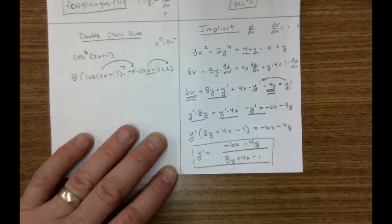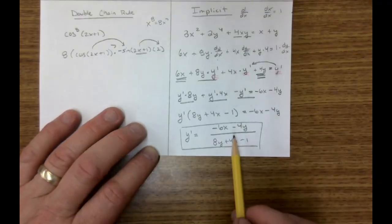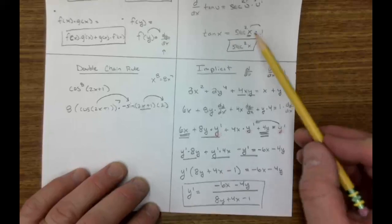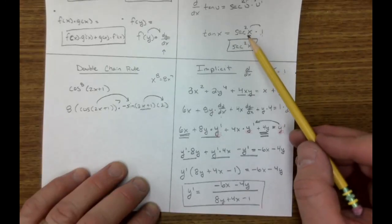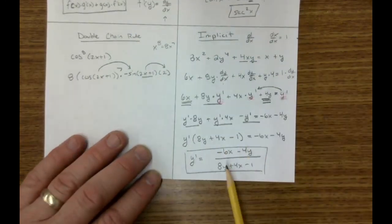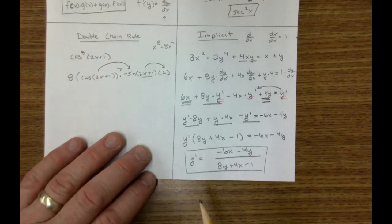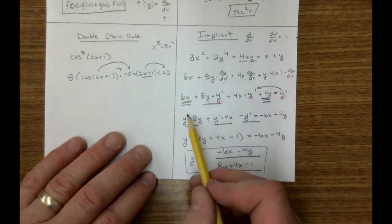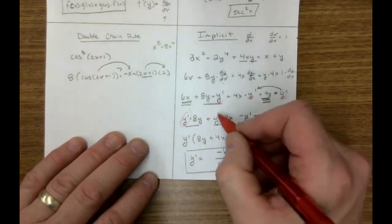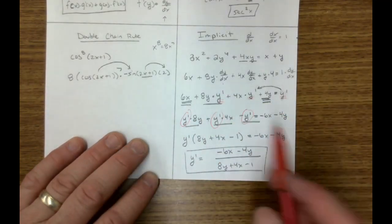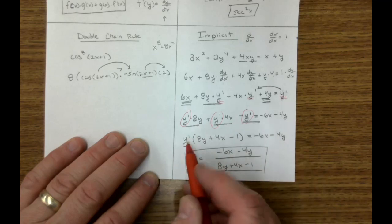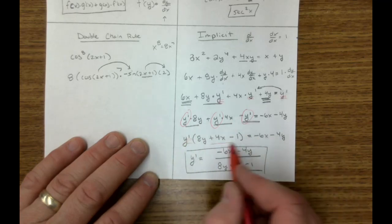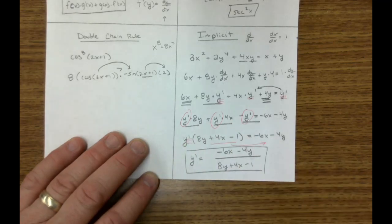Very messy. A lot more moving pieces. Up here, the derivative is just secant squared. Here, a lot more pieces, but the same steps still apply on every problem. Get all your y primes. Here's my y primes. Get them all on the same side. Factor them all out. And then divide this large expression over that way. All right, I hope this gets you started on unit 3.